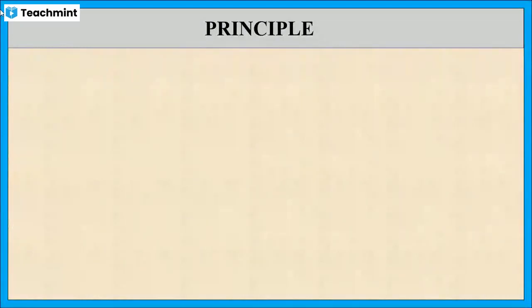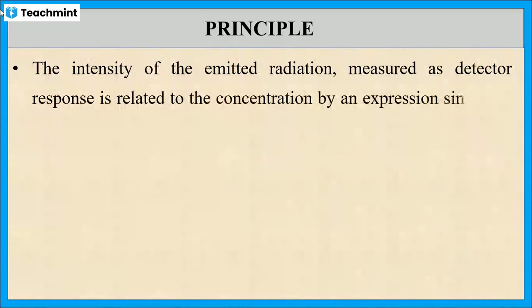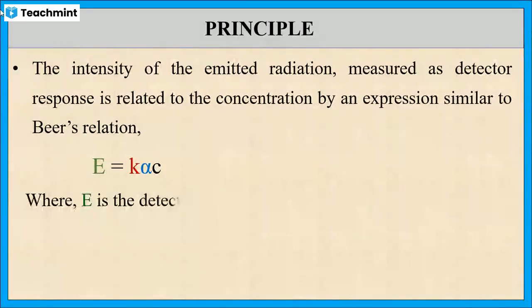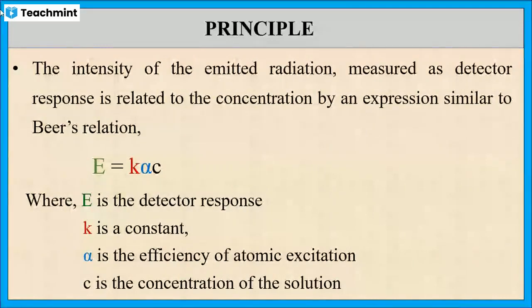The intensity of the emitted radiation is measured in terms of E which is the detector response and which is given by the expression E = k × α × c, where k is the constant, α is the efficiency of atomic excitation, and c is the concentration of the solution.